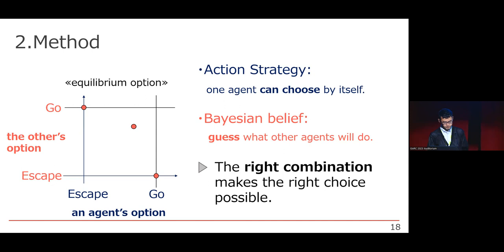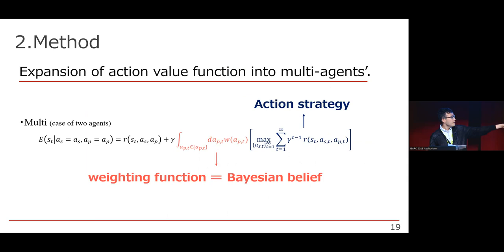The right combination makes the right choice possible. The function following to the Bayesian approach is the weighting function in this calculation. The weighting function and the integration calculation plays a role of Bayesian belief and the right part plays a role of my action strategy.